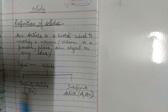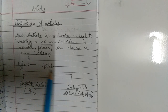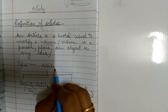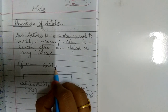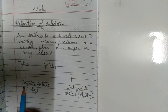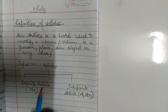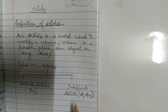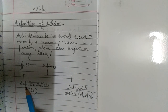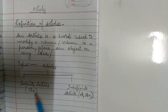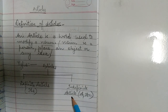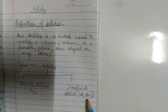There are two types of articles. First is definite articles and second is indefinite articles. In definite articles, we use 'the', and in indefinite articles, we use 'a' and 'an'.